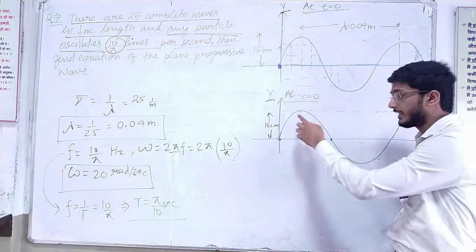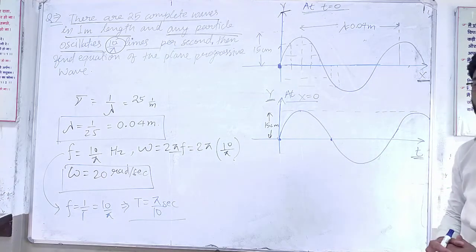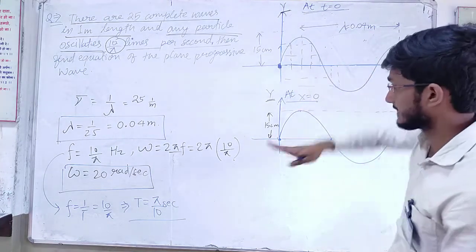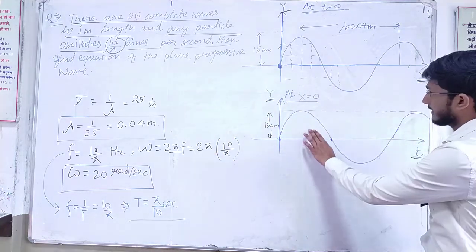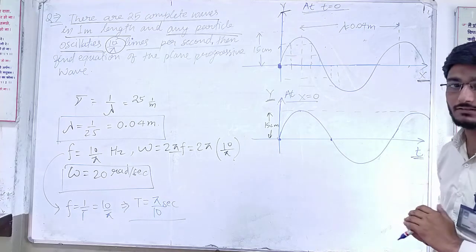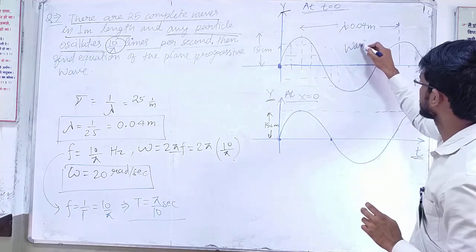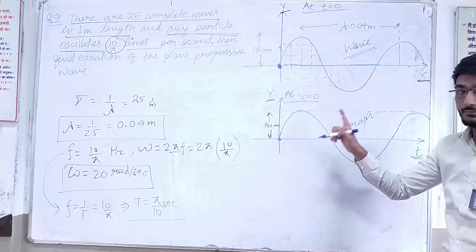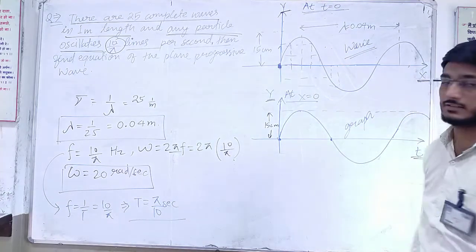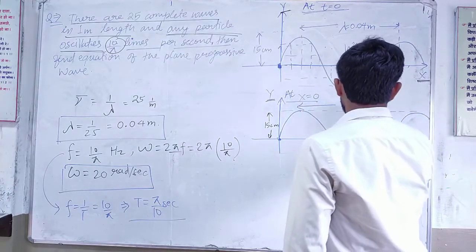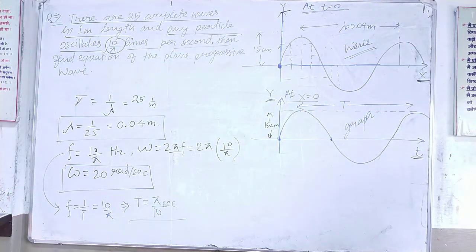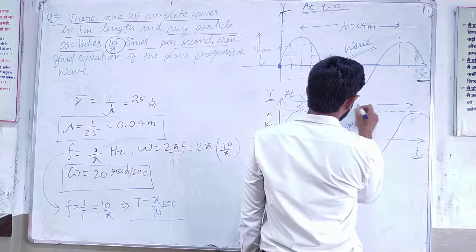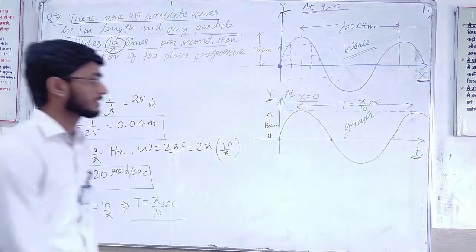We can take this time period from the graph. These are the graphs. This graph has been made by Y, so we have to trace the values. In this separation, this will be the time period. This t value is π/10, so we write it as equal to π/10 seconds.